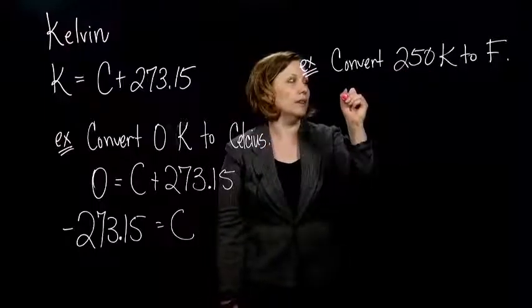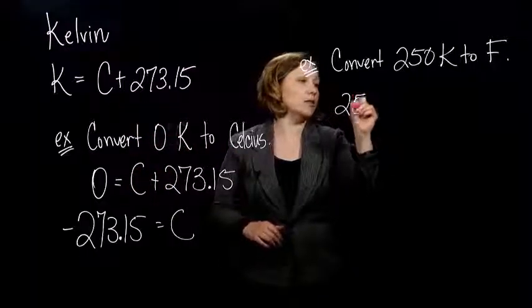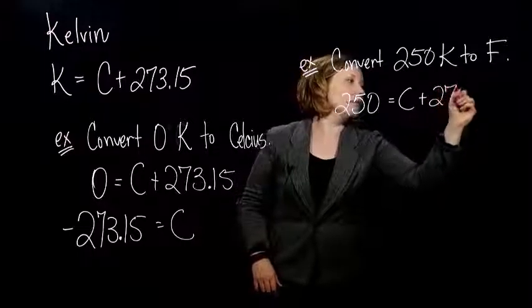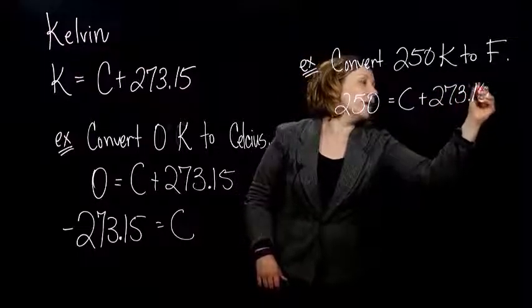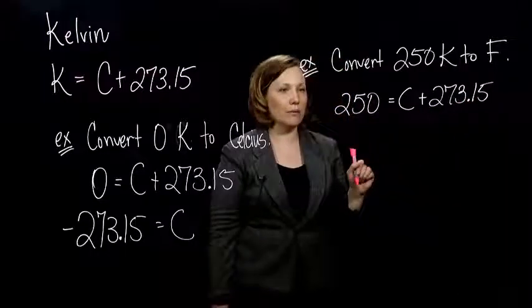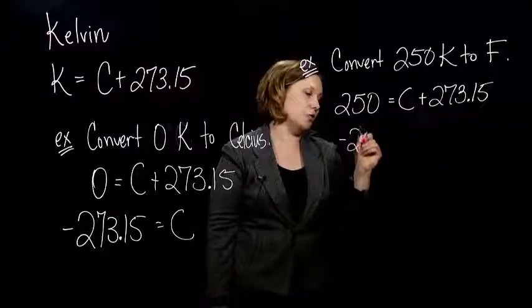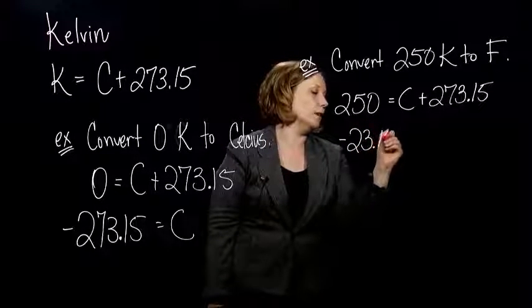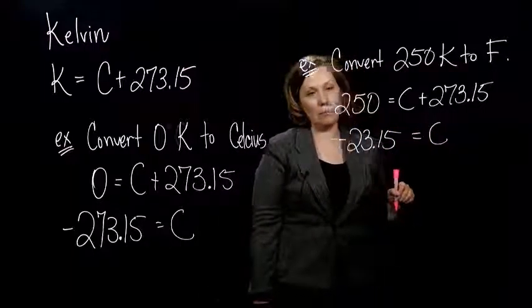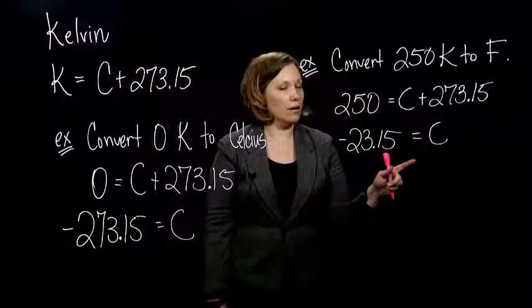So Celsius, I have, using our equation here, 250 in for K, because that's my Kelvins. And I have C plus 273.15. Sometimes if you look this equation up, you'll see that they'll round that .15. Alright. So I subtract 273 from both sides, and I get negative 23.15, when I subtract from 250, is my Celsius temperature. So negative 23.15 Celsius.